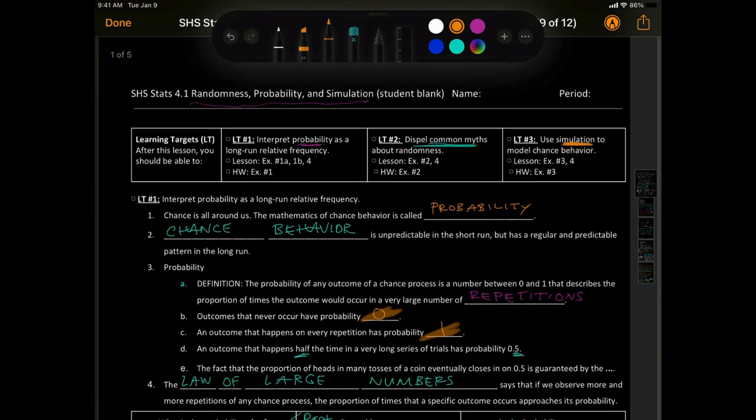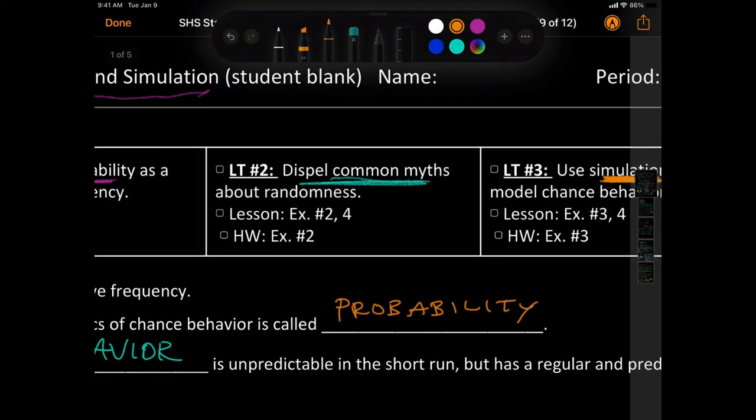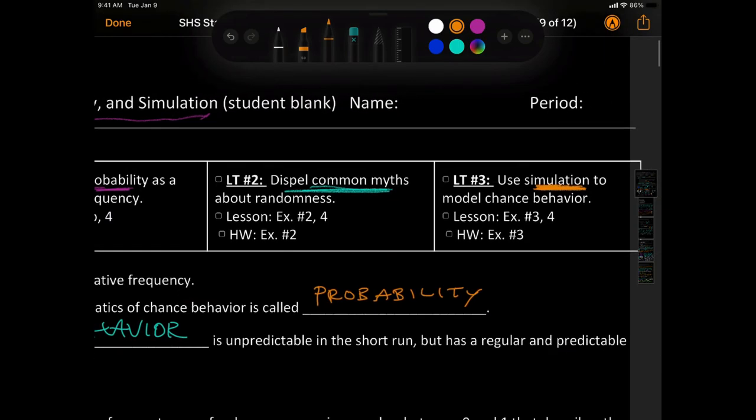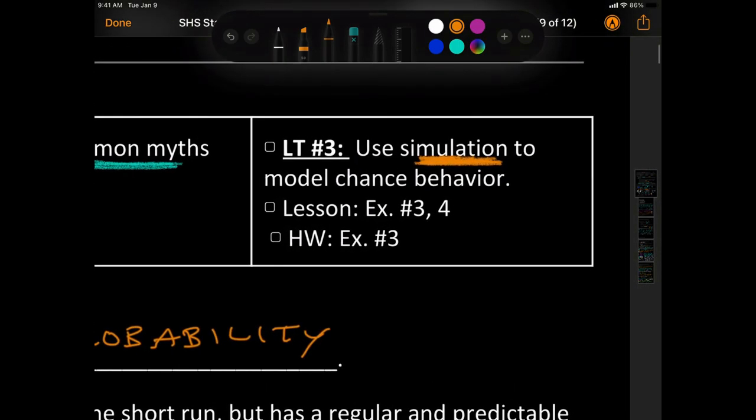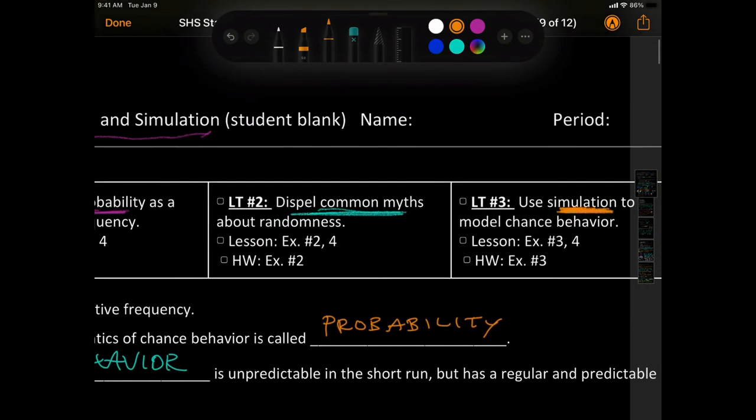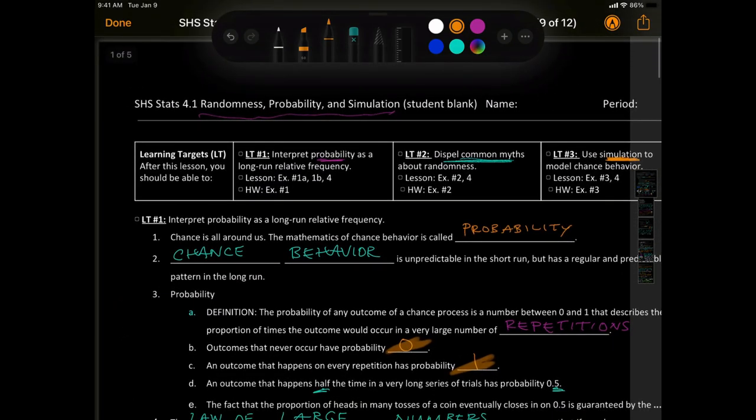Alright, let's review what we've done. We need to interpret the probability as a long-term relative frequency. So, we should be able to see this over many trials. Number, learning target number two, there are a bunch of myths or lies about randomness. We've talked about those. It's not the hot hand. Right? You can't just say, you can do it also in short trials. And number three, we use technology to simulate the model of chance behavior. And that is lesson 4.1. See you guys.